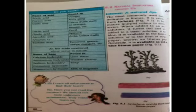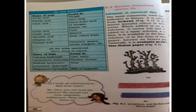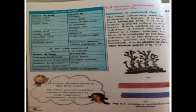Now next point: natural indicators around us. The first natural indicator is litmus, a natural dye. The most commonly used natural indicator is litmus, and remember it is extracted from lichens. When added to an acidic solution it turns red, and when added to a basic solution it turns blue. Nowadays it is available in the form of paper strips — red litmus paper and blue litmus paper.